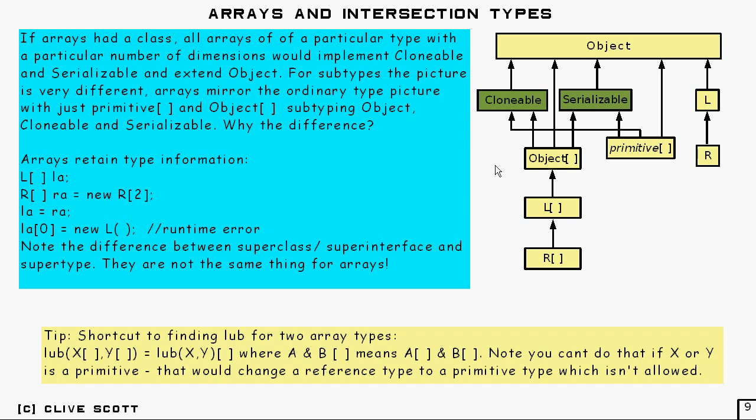So that's pretty simple. And one extra thing you have to know, though, is that for both primitive arrays and object arrays, both are subtypes of Object, and they implement Cloneable and Serializable as two interfaces. And so there, that's the picture for arrays.